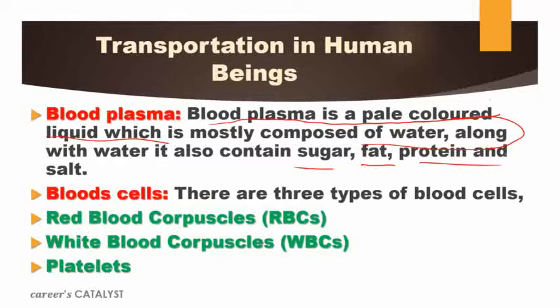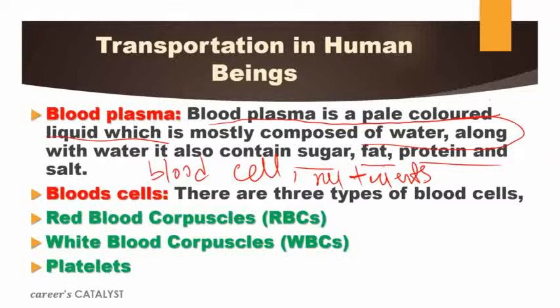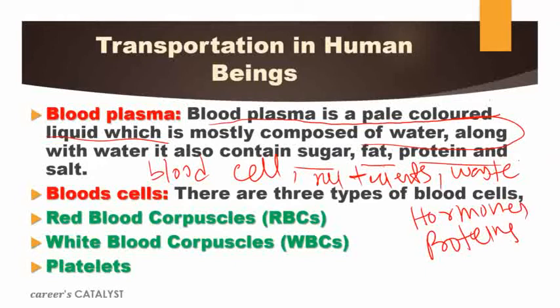Blood plasma function is very complicated and it carries out most of the substances inside our body. It transports blood cells throughout the body. It also carries nutrients like sugar, as well as waste products. The hormones and proteins are also conducted by this blood plasma. So blood plasma plays a very important role in our body's transport system because all the substances — blood cells, nutrients, waste products, hormones, and proteins — are transported by this liquid medium.